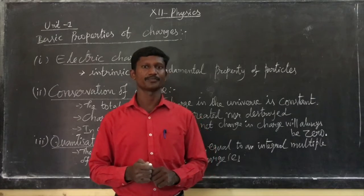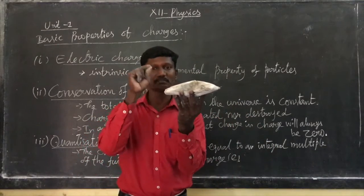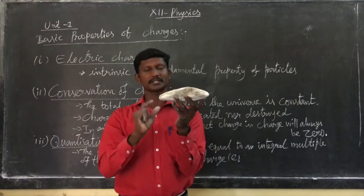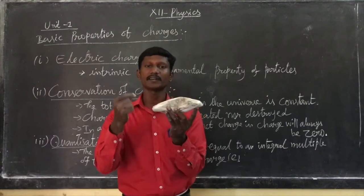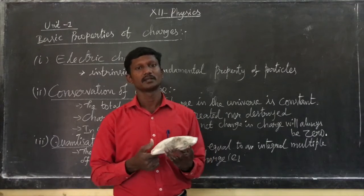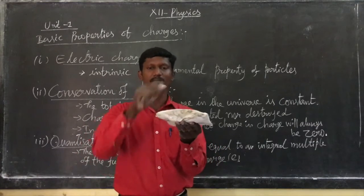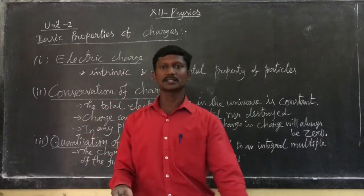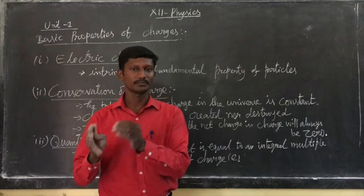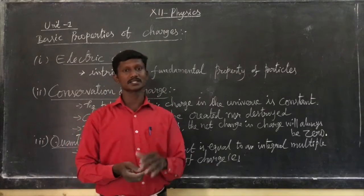First, electric charge is a property of an object. The object has some mass. Mass is an intrinsic property — that is an intrinsic property of that object. So that object has mass as a fundamental property. Similarly, for one particle or object, charge is also a fundamental property, or intrinsic property.